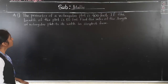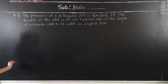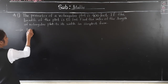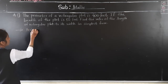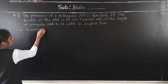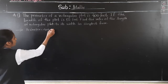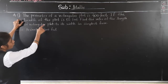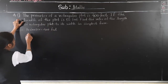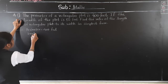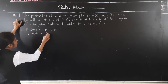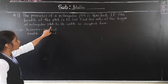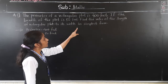Question number 7. The perimeter of a rectangular plot is 400 feet. The breadth of the rectangular plot is 50 feet. Find the ratio of the length of the rectangular plot to its width in simplest form.